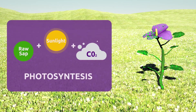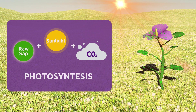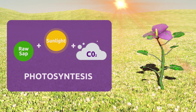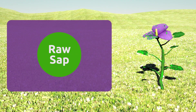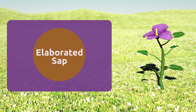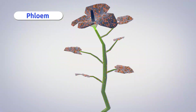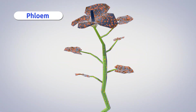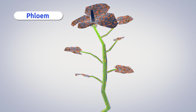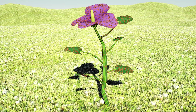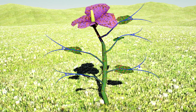Photosynthesis involves sunlight, raw sap, and carbon dioxide. During photosynthesis, raw sap becomes elaborated sap, and living tissues called phloem spread elaborated sap to the rest of the plant. This is when oxygen is released.